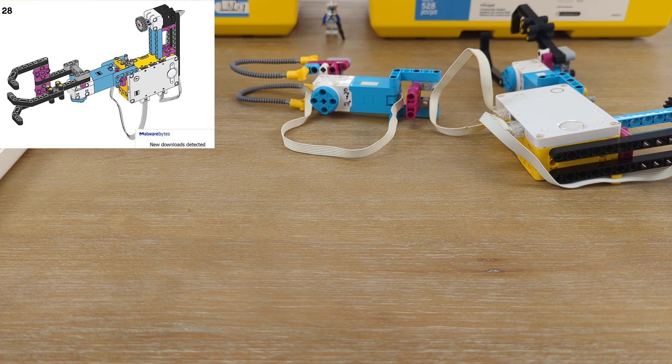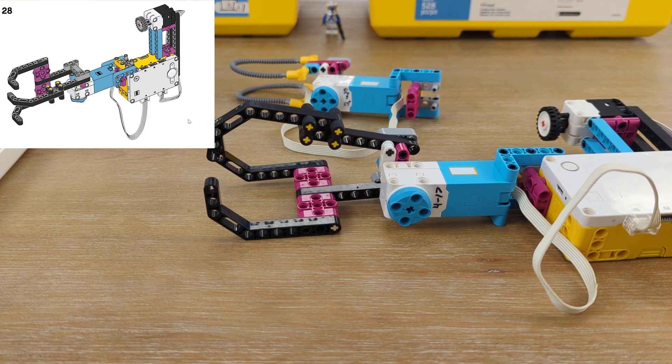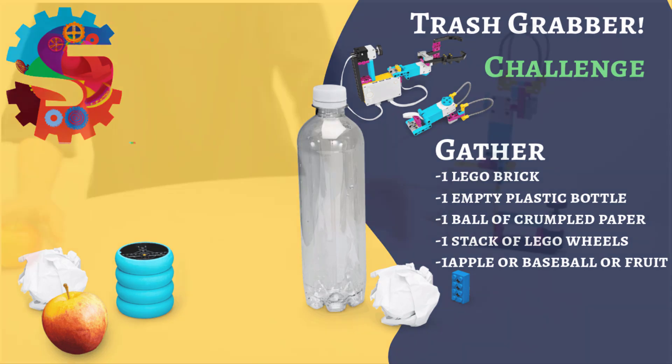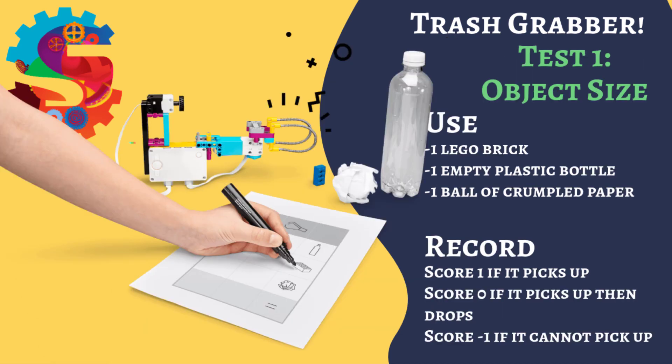I'd love to see how this grabber two compares to grabber one. What is it good at picking up? What is it not good at picking up? But go ahead and do some experiments or some tests with it. For our challenge, we're going to do two different tests. You need to gather up some supplies. We need to get some litter to test our grabbers. You're going to need one Lego brick, one empty plastic bottle, a ball of crumpled paper, a stack of Lego wheels. You can attach all these wheels together using a long yellow axle through the middle of all of them. Then finally, we need something heavy and round. That could be an apple or a baseball or a lacrosse ball or any other round fruit. We're going to do our first test. Our first test is seeing which grabbers can pick up objects that are small or large. For test number one, you need to grab your plastic water bottle, your crumpled ball of paper, and your Lego brick.